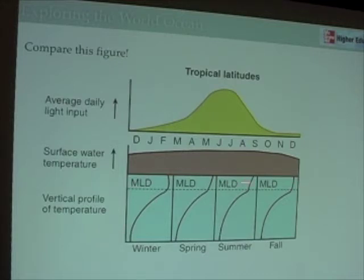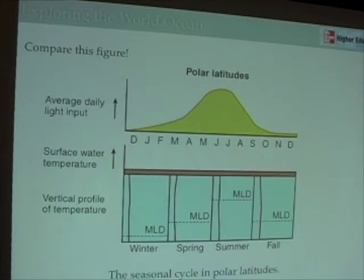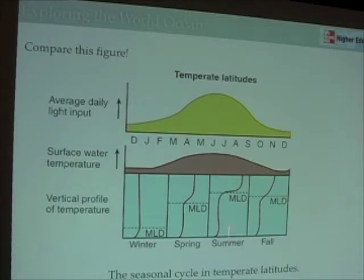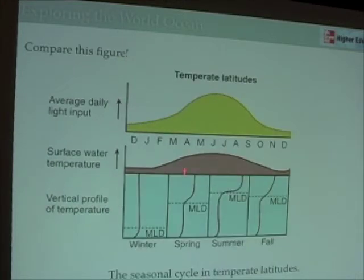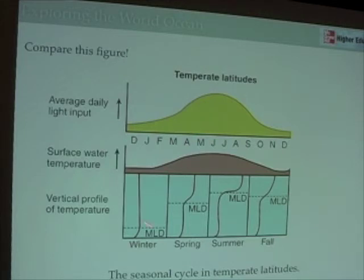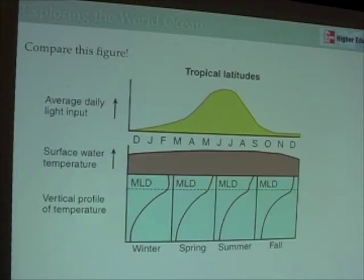If we compare what is the normal situation for tropical latitudes throughout the year, it looks a lot like summertime at temperate latitudes. The polar situation should actually show a bit more definition between the warmer surface waters and the colder waters in summer, and should look more like spring. So we see the different latitudes — polar, temperate, and tropical — resembling each other at different times of year, and we want to keep that in mind because the productivity of these regions will depend on the stratification of the water column.